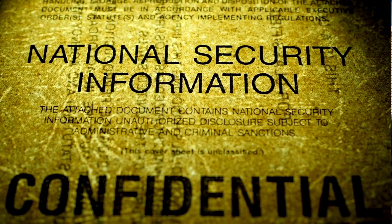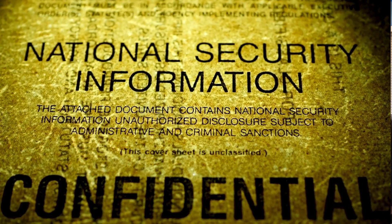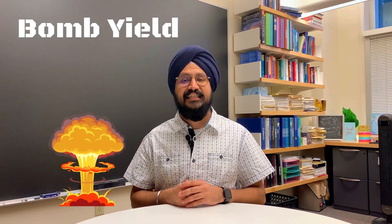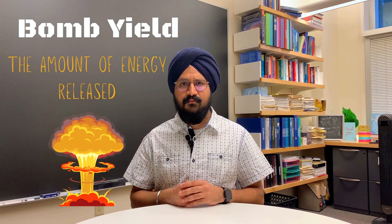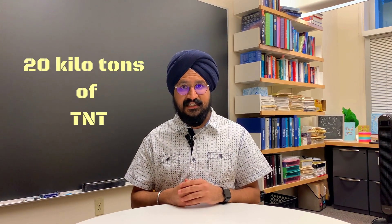The details of the Trinity test were initially a closely guarded secret, as you can imagine, in the interest of national security. One of the most important quantities that everybody wanted to know was the yield of the atomic bomb, the energy released in the detonation. While the official number of 20 kilotons of TNT was declassified and made public much later, there are two famous stories of scientists who were able to estimate the yield of the bomb before official measurements were released.